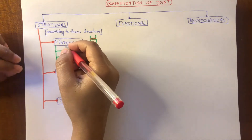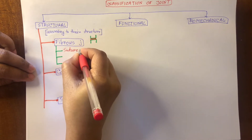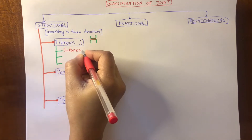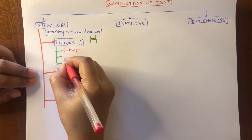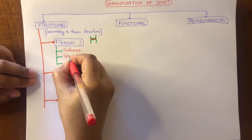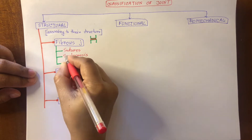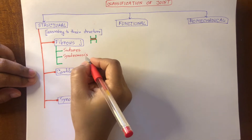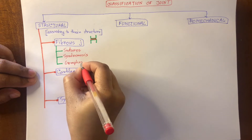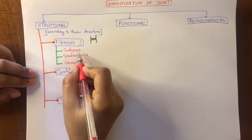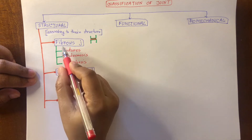Fibrous joints can be sub-classified into three types. These are: suture joints, which we can find between two skull bones; syndesmosis; and gomphosis. These are fibrous joints.